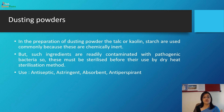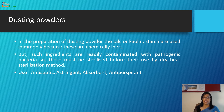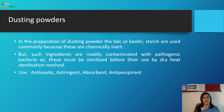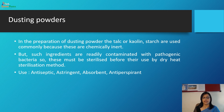In the preparation of dusting powder, talc, kaolin, and starch are used commonly because they are chemically inert. However, these ingredients are readily contaminated by pathogenic bacteria, so they must be sterilized before use by dry heat sterilization. Dusting powders are dispensed in a sifter or aerosol container. Uses include antiseptic, antiperspirant, absorbent, and astringent applications.